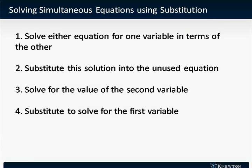The first step is to solve either equation for one variable in terms of the other. The second step is to substitute this solution into the unused equation. Now we'll have one equation that just has one variable.